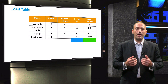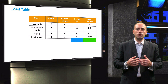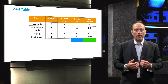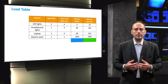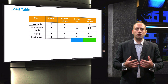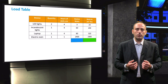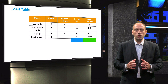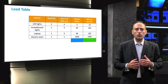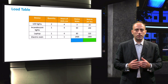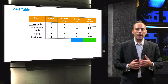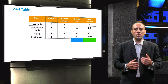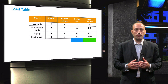We will take a step back and look at the load table, which we have introduced earlier in this section. A load table basically contains information about the different loads that will be powered by the PV system. The load table contains information on the type of devices used, their rated power, and the number of hours they are operational during a 24-hour time period.